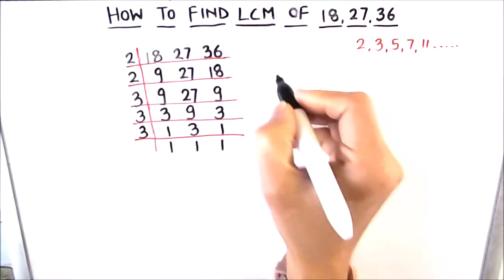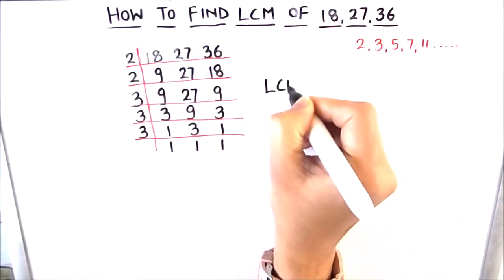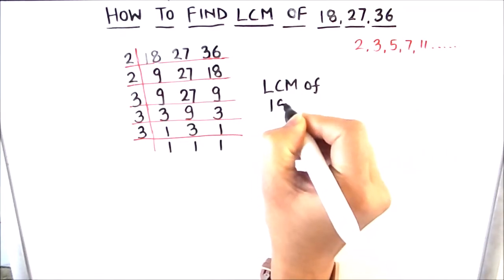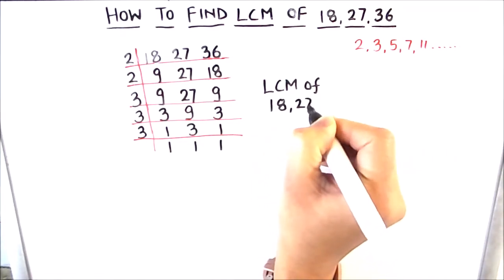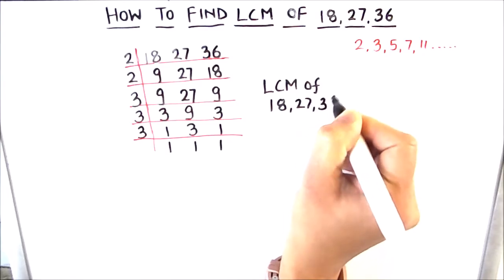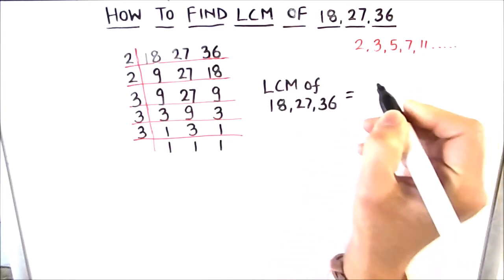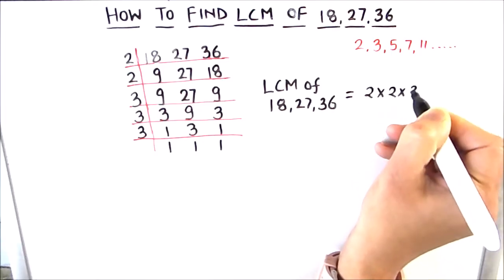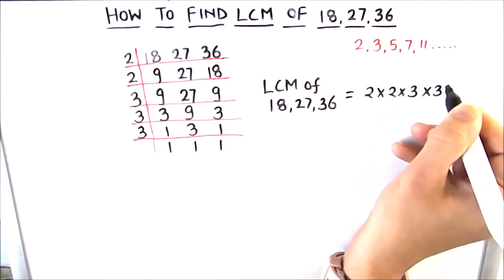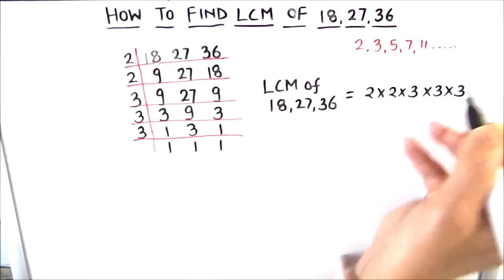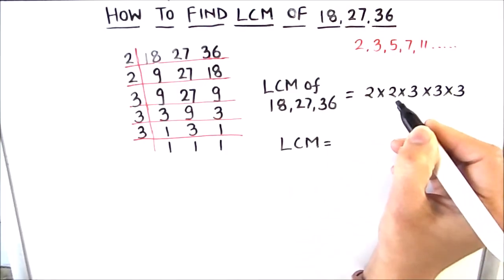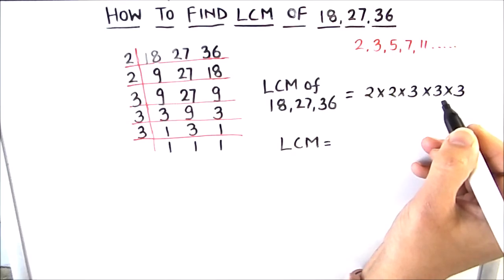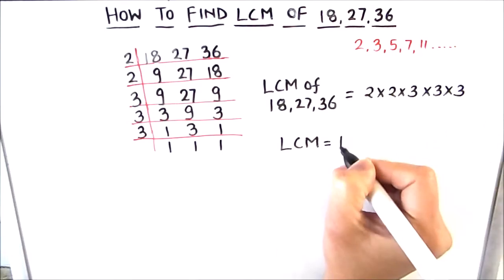To find the LCM of the numbers, we are going to take the product of all the numbers which are on the left hand side of the ladder. So LCM of 18, 27 and 36 is equal to 2 times 2 times 3 times 3 times 3. 2 times 2 is 4, 4 times 3 is 12, 12 times 3 is 36, and 36 times 3 is 108.